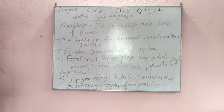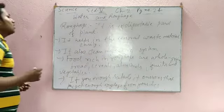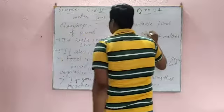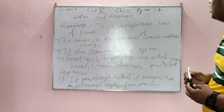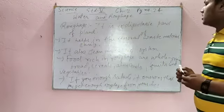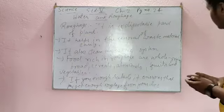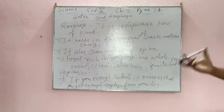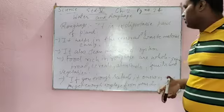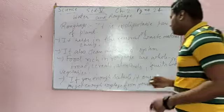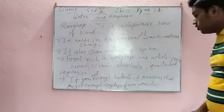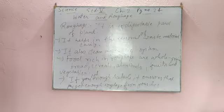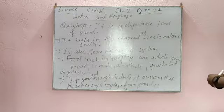Understood? First, it helps in the removal of waste material easily. It is an indigestible part of the plant. It also cleans the digestive system. Foods which are rich in roughage are whole grains, cereals, almonds, fruits and vegetables. Now, if you eat enough salads, it ensures that you get enough roughage from your diet.